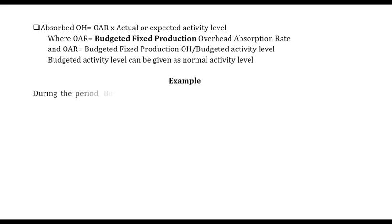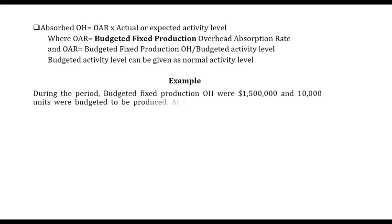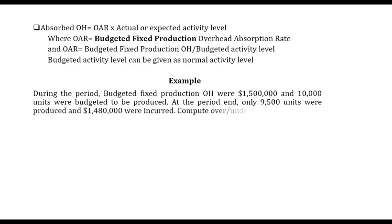Let's look at an example. During the period, budgeted fixed production overheads were $1.5 million and 10,000 units were budgeted to be produced. But at the period end, only 9,500 units were actually produced and $1.48 million in actual overheads were incurred. We are asked to compute the over or under absorption.